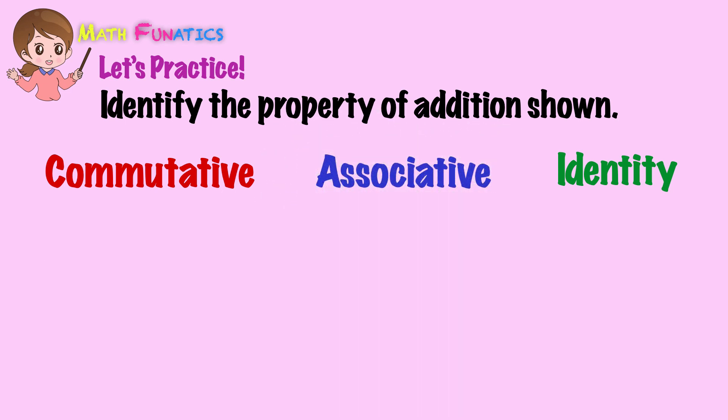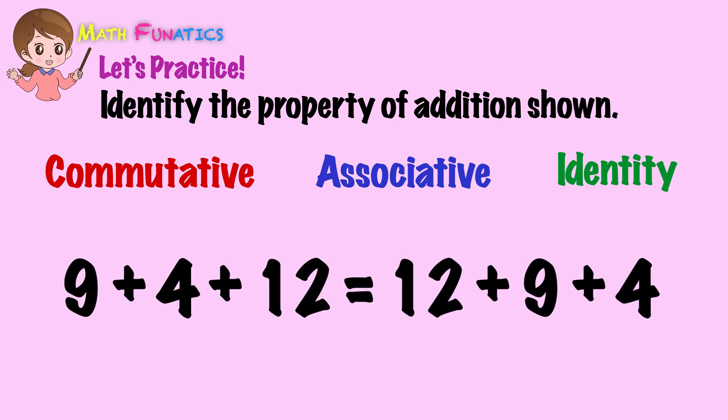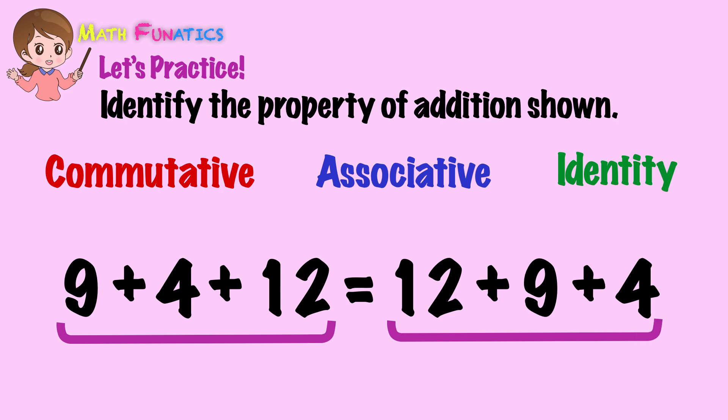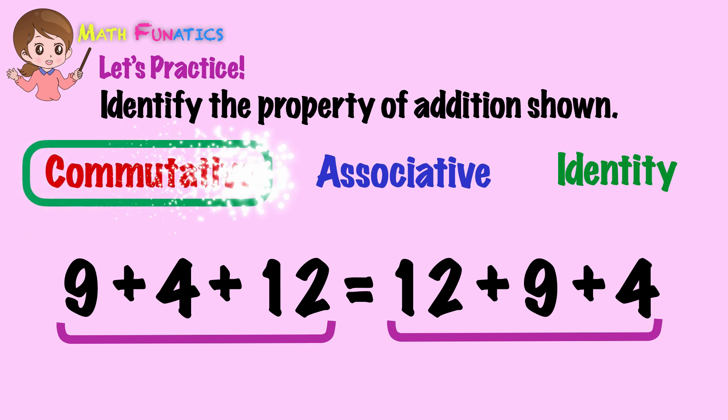How about this question? 9 plus 4 plus 12 equals 12 plus 9 plus 4. Observe that there are three addends on both sides of the equation but are arranged differently. Which property is shown? Correct — it's commutative property.